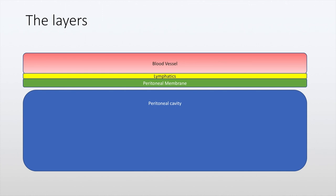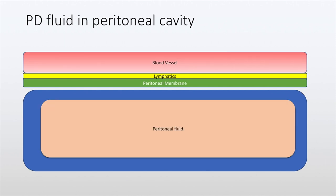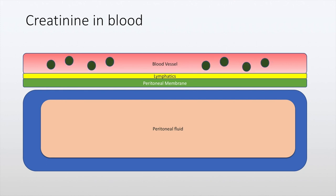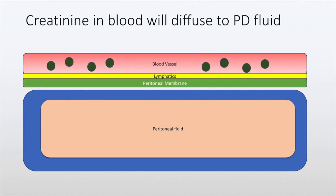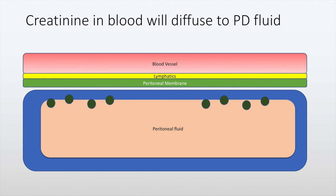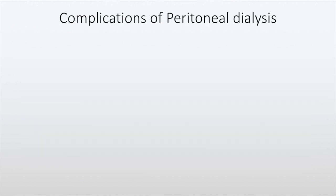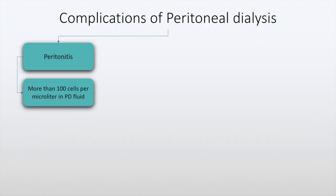The concept of peritoneal dialysis can be demonstrated in the schematic diagram. The layers are the blood vessel, lymphatics, peritoneal membrane, and the peritoneal cavity. The fluid is now infused into the peritoneal cavity during peritoneal dialysis and this is the creatinine in the blood which now diffuses to the peritoneal fluid. The complications of peritoneal dialysis include peritonitis, which is defined as more than 100 neutrophils per microliter in the peritoneal dialysis fluid.